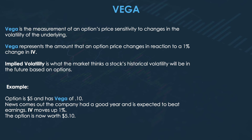The last Greek we're covering is Vega. Vega is a measurement of an option's price sensitivity to changes in volatility of the underlying. It represents the amount that an option price changes in reaction to a 1% change in IV — implied volatility — which needs a video all on its own, but to sum it up: implied volatility is basically what the market thinks a stock's historical volatility will be in the future, based on options.